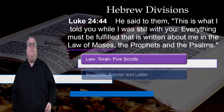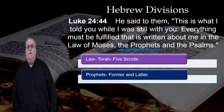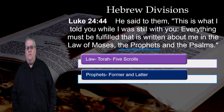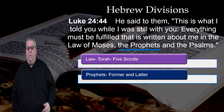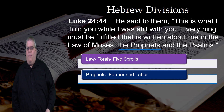Next is the Prophets. In the Hebrew Old Testament, this group is divided into two subcategories. The first is the former Prophets, which are all the history books, like Joshua, Samuel, Kings, etc. And then the later Prophets, which are the writing Prophets, like Isaiah, Jeremiah, Hosea, Amos, etc.